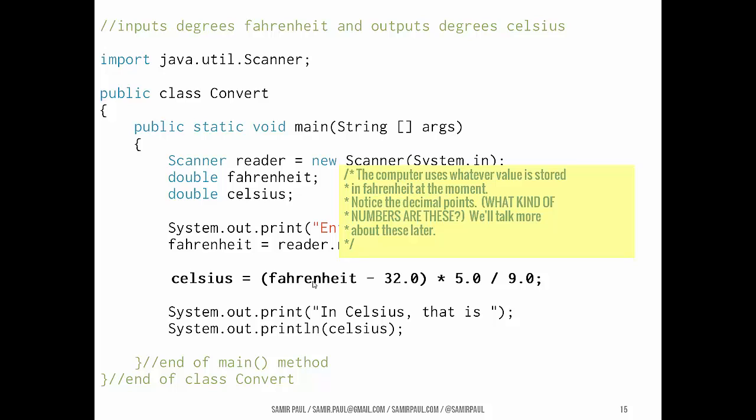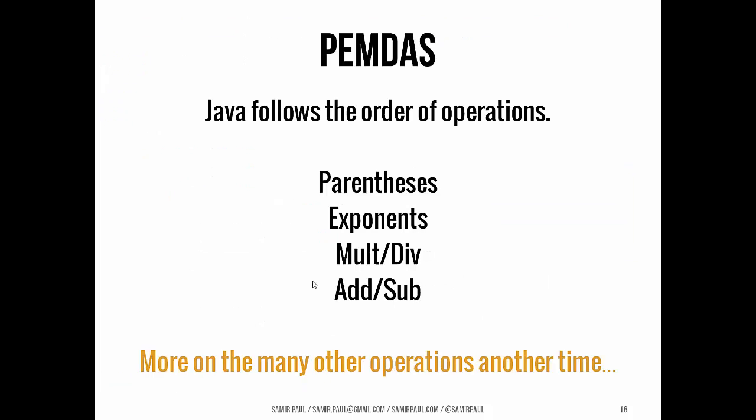Okay. And the next line here is we're looking at a little bit of number crunching that's happening. Again, let's look at this from right to left because we do have an assignment operator. So the thing on the right, we're saying, okay, take whatever the user entered in because now that's sitting in fahrenheit, subtract 32, multiply by five, divide by nine, and whatever you get, store it in celsius, right? So celsius gets that. In that math that we just did, we follow the order of operations, parentheses, exponents, multiplication and division, left to right, add and subtract, left to right.